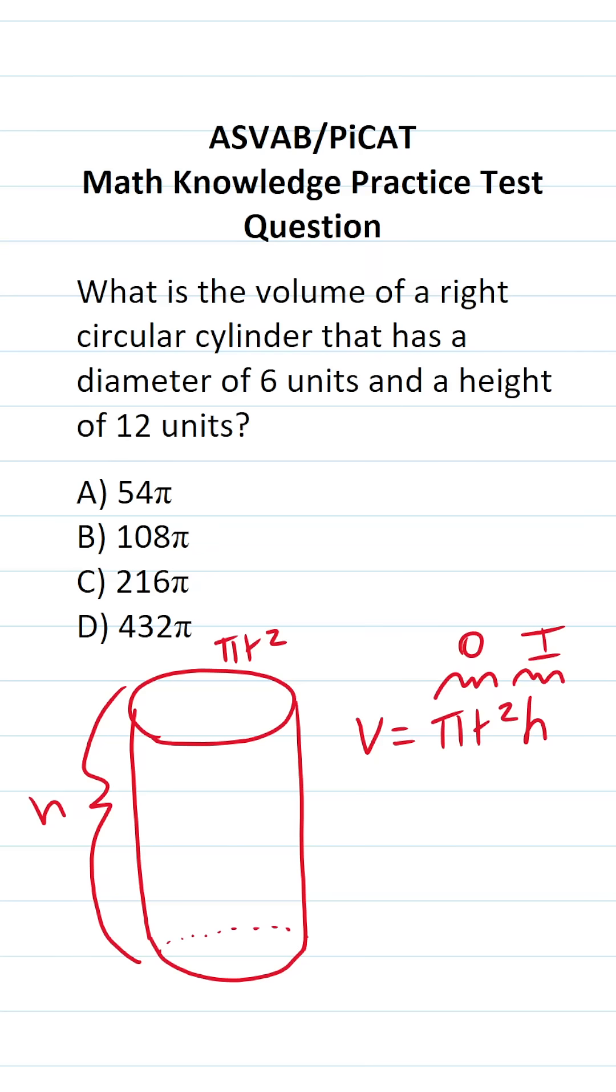So with that in mind, let's go ahead and start plugging these values in and solving this one. First of all, we know the height of this cylinder is 12 units. So we can go ahead and plug that in over here.